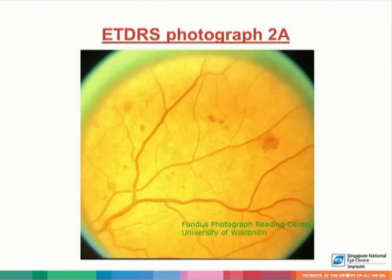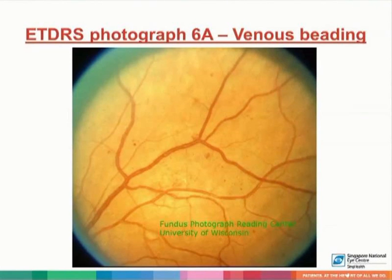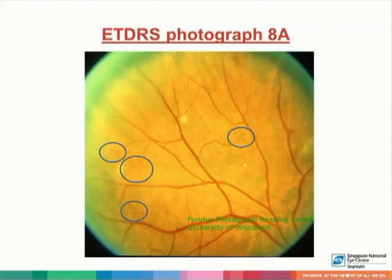This is the ETDRS photograph 2A, showing multiple areas of dot-blot hemorrhages. Here is photograph 6A, showing presence of moderate venous beading. And this is ETDRS photograph 8A, showing areas of intraretinal microvascular abnormalities in the areas circled.